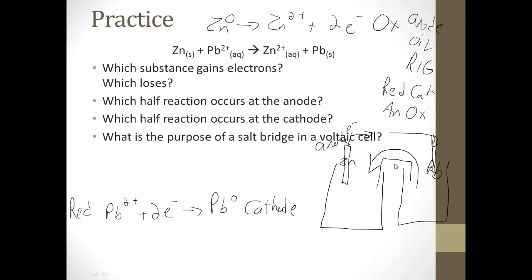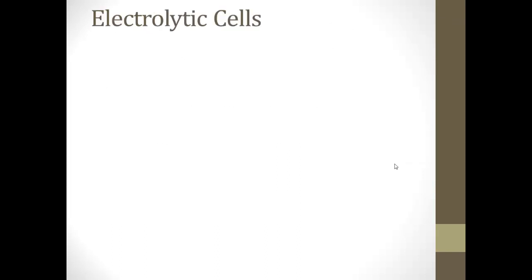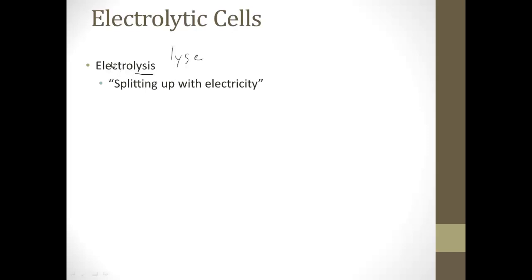Voltaic cells are basically batteries. There's another kind of cell we have to know: an electrolytic cell, based on electrolysis. 'Lysis' is a word from biology meaning to break apart, so electrolysis means breaking or splitting up with electricity — using electricity to break something apart.